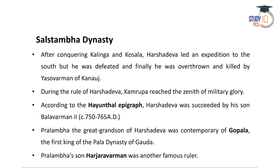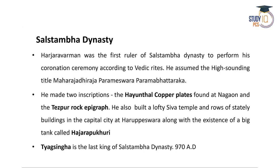According to the Hayanthal epigraph, Harshadeva was succeeded by his son Balavarman. Palamba, the great-grandson of Harshadeva, was contemporary with Gopala, the first king of the Pala dynasty of Gauda. Palamba's son Hazaravarman was another famous ruler and the first ruler of the Salastambha dynasty to perform his coronation ceremony according to Vedic rites. He assumed the high-sounding title Maharaja Dhiraaja Parameshvara Parambhattaraka.